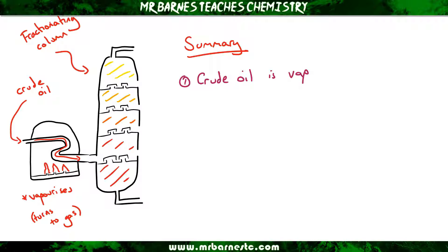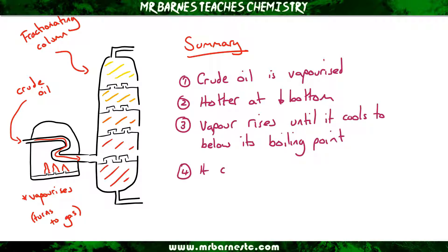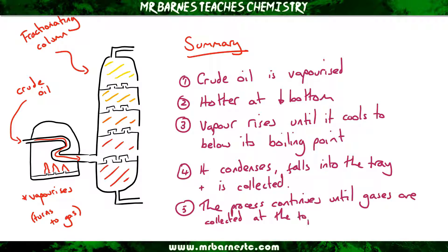So in summary, your crude oil is vaporized, the fractionating column is hotter at the bottom, the vapor rises until it cools to below its boiling point, it will condense, turn back into a liquid, fall into the tray and it's collected. The process will then continue until all the gases are collected at the top.